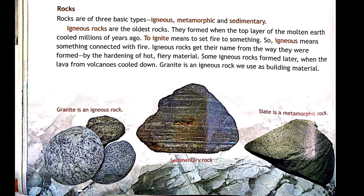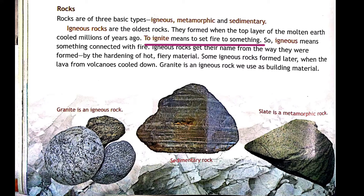Next we are going to learn about rocks. There are basically three types of rocks: igneous rock, metamorphic rock, and sedimentary rock. Igneous rocks are said to be the oldest kind of rock. They are formed when the top layer of the earth cooled many years ago. The word 'igneous' comes from a root meaning to set fire or light to something, so igneous rocks are connected with fire and heat.